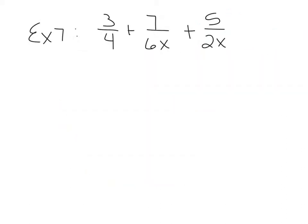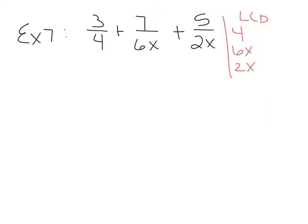Example 7, still on page 152. It says 3 fourths plus 7 over 6x plus 5 over 2x. With different denominators, the first thing we need to do is find a common denominator. So I'm going to list my denominators and then break them down into prime factors — the prime factors of 4, the prime factors of 6x, and the prime factors of 2x.